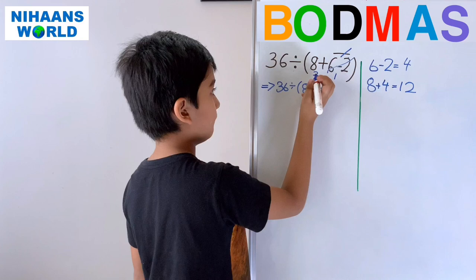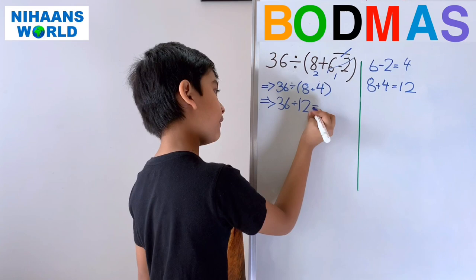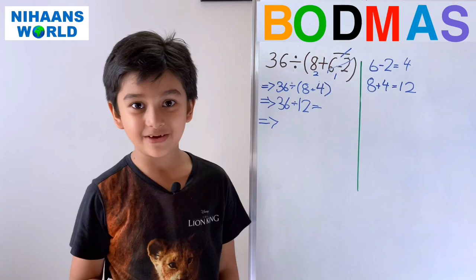Now we have to do 36 divided by 12. 36 divided by 12 is equal to 3. So the answer is 3.